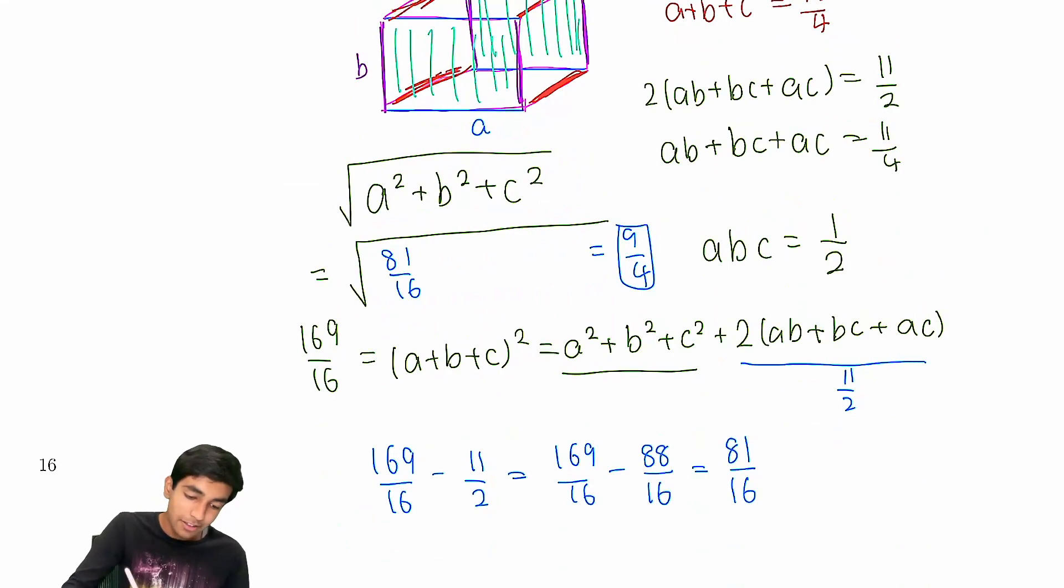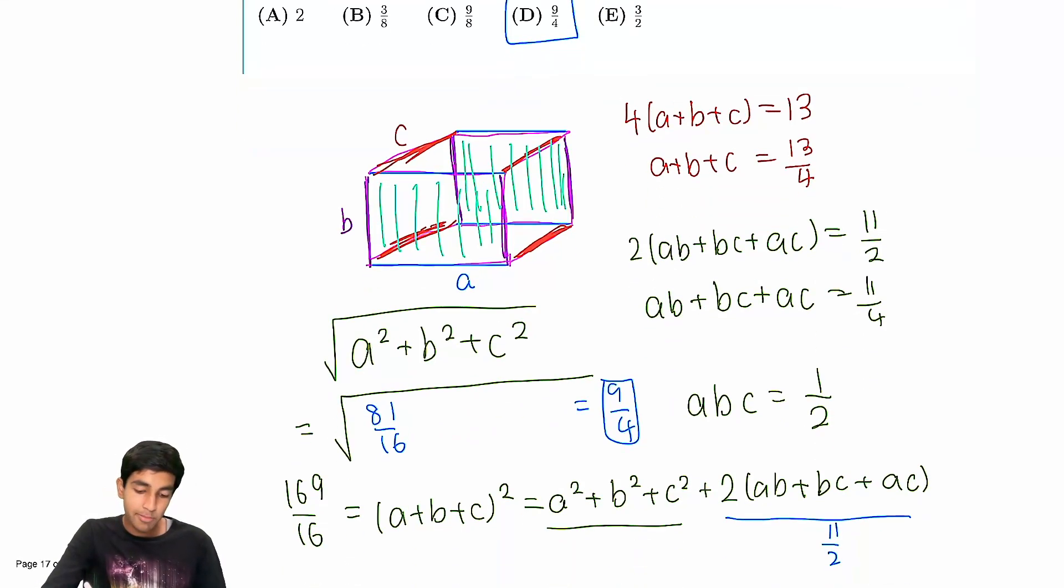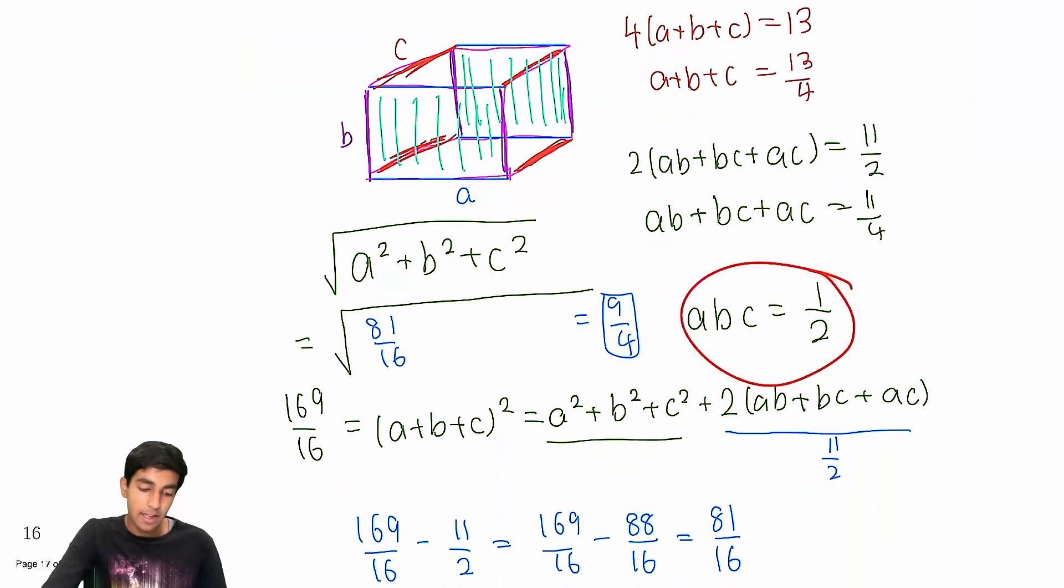And that's the final answer. This is actually quite easy for a number 17 on the AMC 10 or number 13 on the AMC 12. The main trick was realizing we're given a + b + c, ab + bc + ac, and abc. This is similar to Vieta's formulas. There's probably another solution where you reconstruct the cubic, but that's not necessary. You just square (a + b + c) to get the term with 2(ab + bc + ac), and that gives us our answer of 81/16. Thanks for watching.